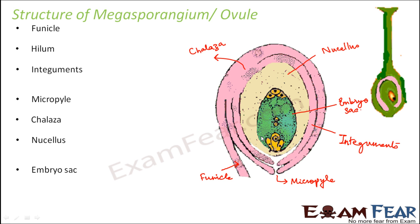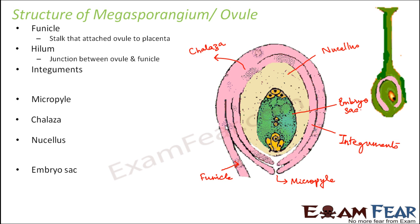The funicle is the stalk that attaches the ovule to the placenta — a tube-like or stalk-like structure connecting them. The hilum is the junction between the ovule and the funicle — the point where they connect. Integuments are the protective envelopes around the ovule. The megasporangium is very delicate because inside it the female gametes will form, so it needs protection. Multiple layers — the integuments — provide this protection. There can be one or many integument layers.